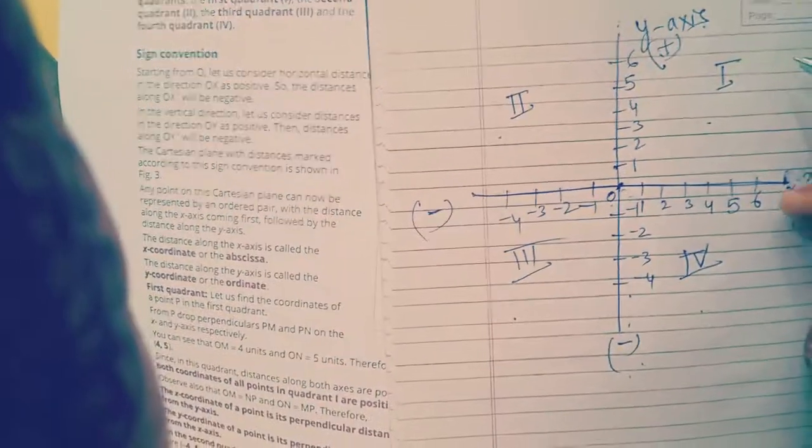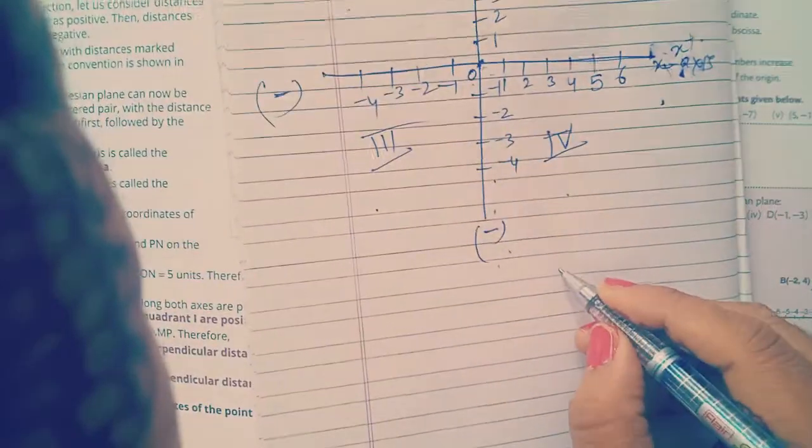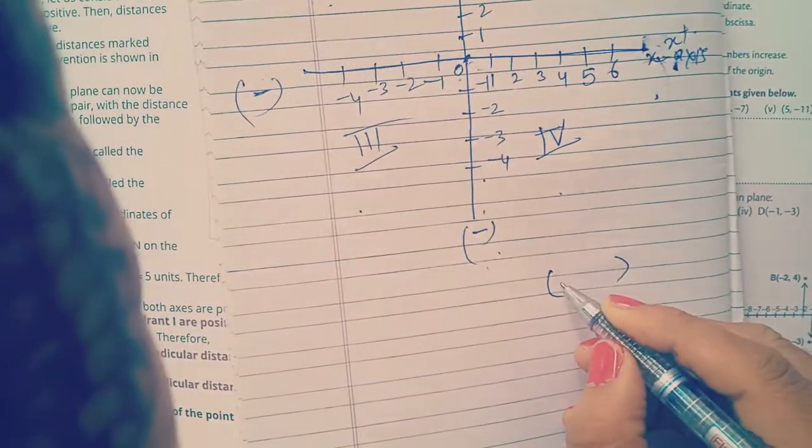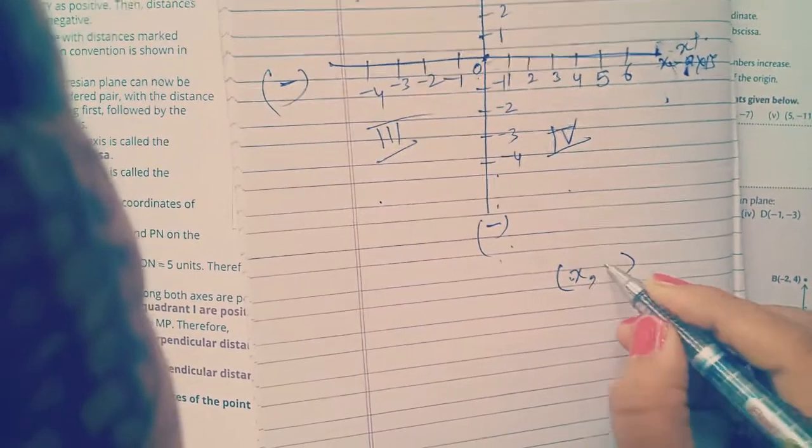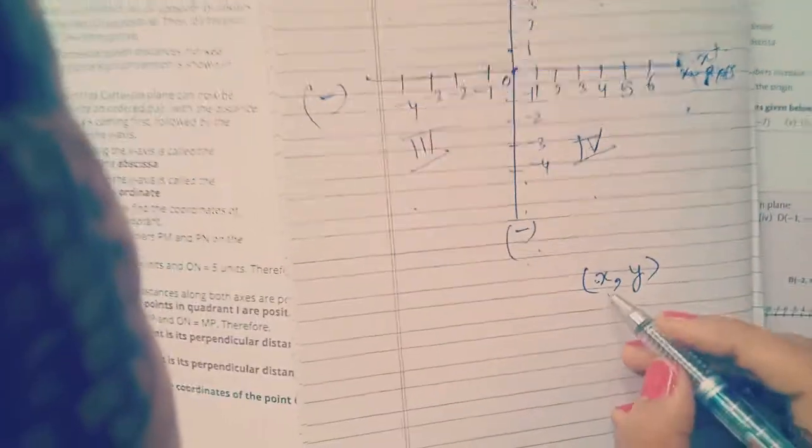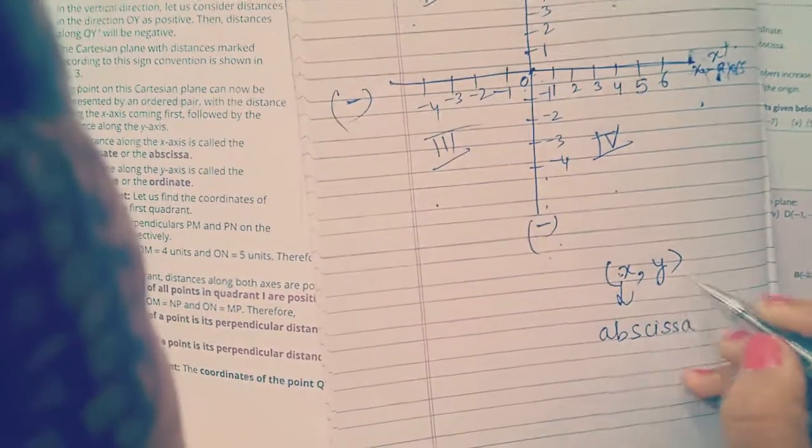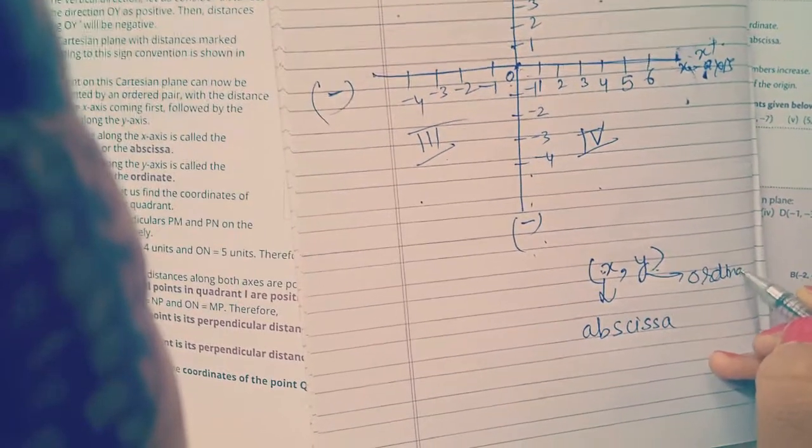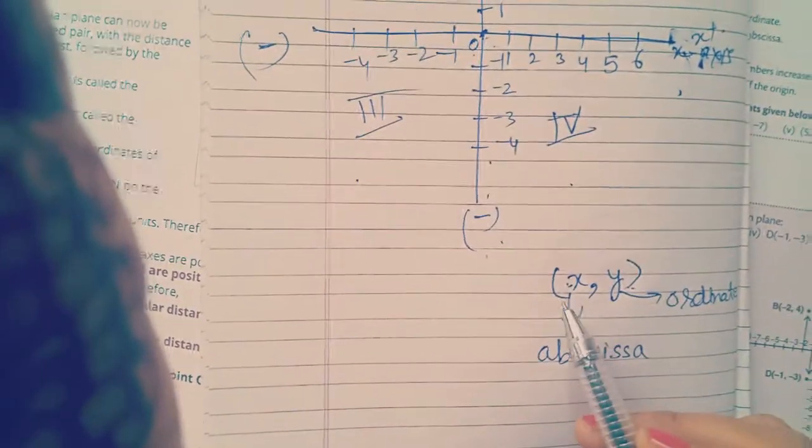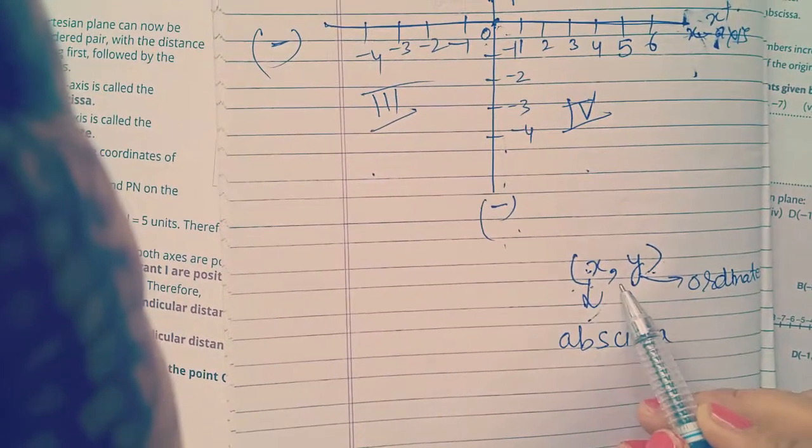So in the coordinate pair, if we will write the position of the point, we will write in bracket. Firstly, we will write the coordinate of x. Then value of y. x is called abscissa, and y is also known as ordinate. Okay, when we will locate the point, firstly we will write the value of x, comma, then value of y.